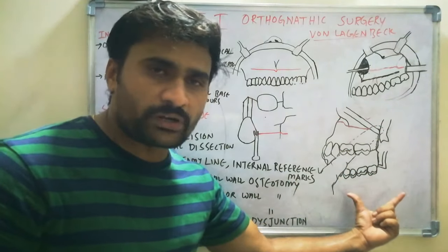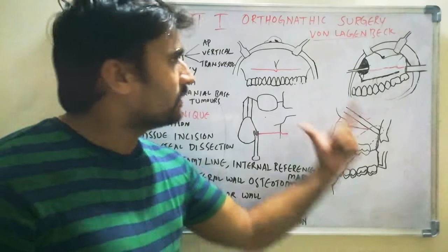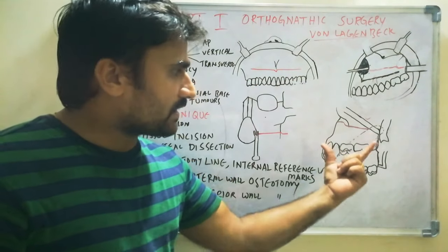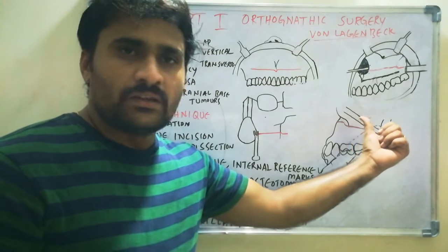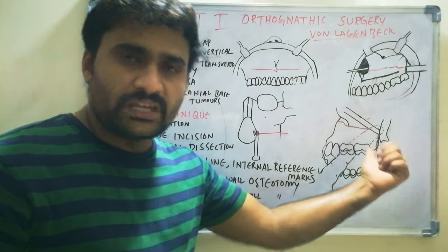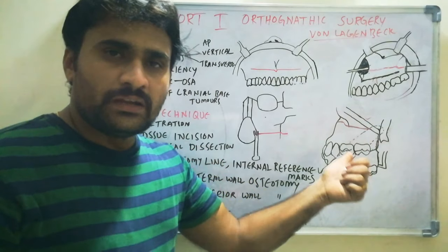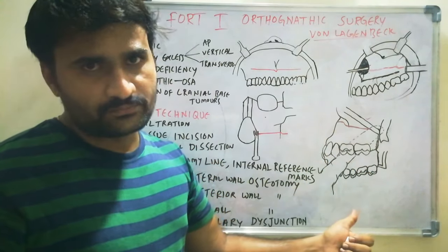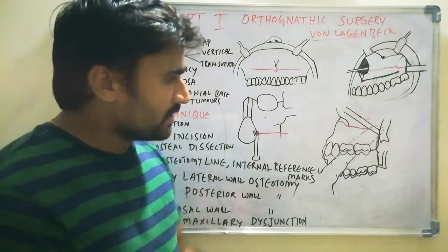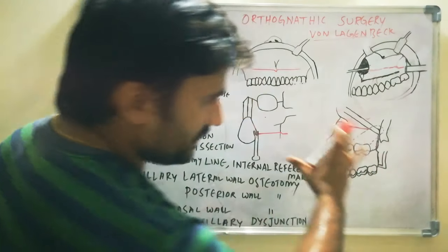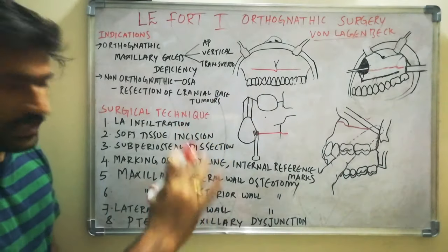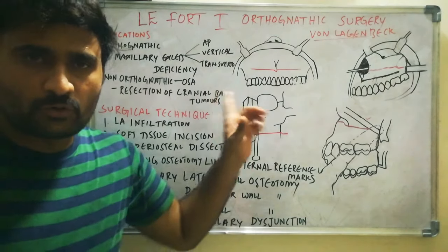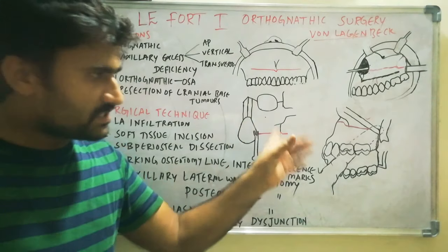This is the most important step of Le Fort 1 osteotomy. If the cut is incomplete in the pterygomaxillary area, you will feel difficulty when down-fracturing the maxilla. We have now completed the main steps of Le Fort 1 osteotomy on one side.